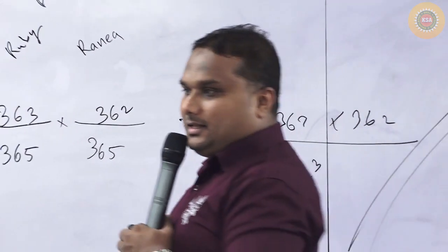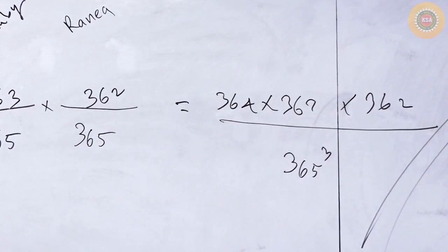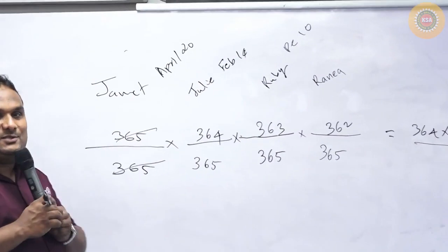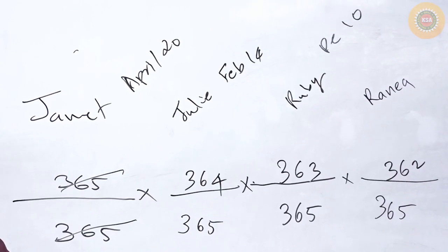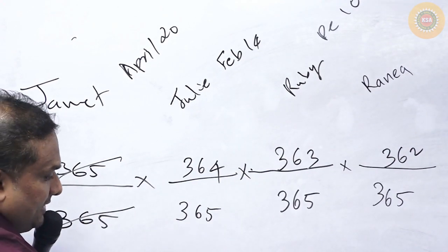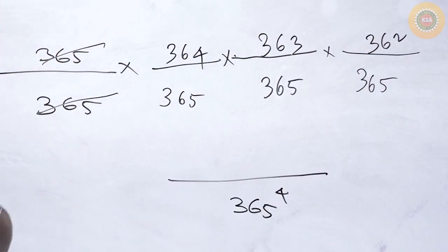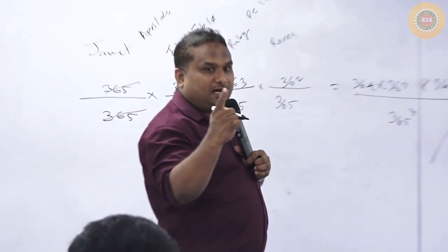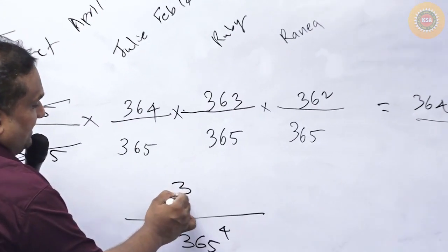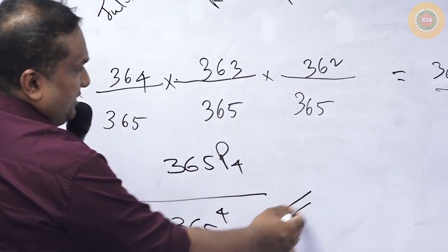This is what was done in the textbook. But my dear friends, it is not so complex — it is very simple. In the denominator it is 365 to the power 4, and in the numerator it is 365 permutation 4.